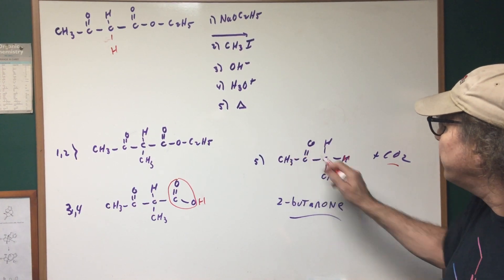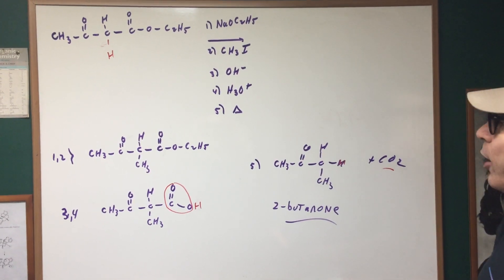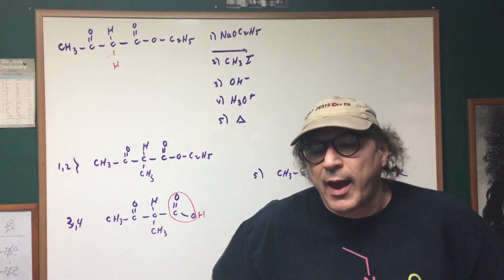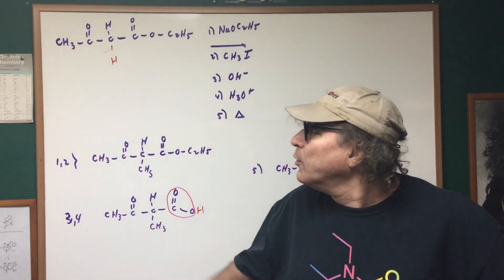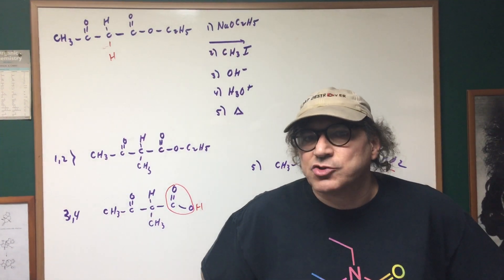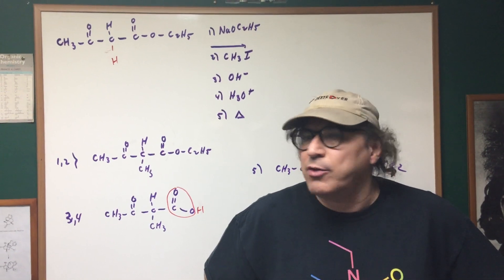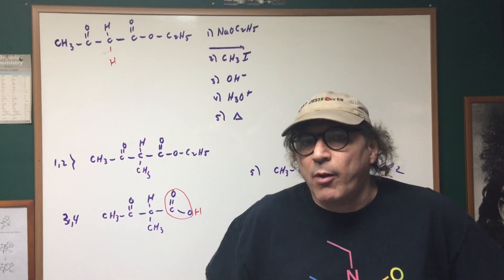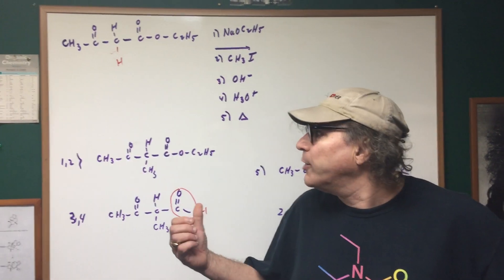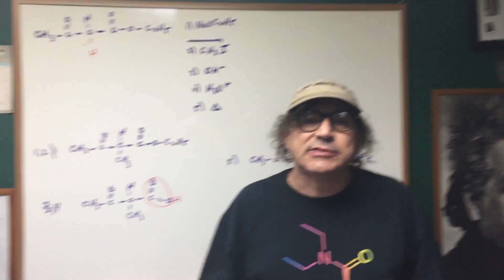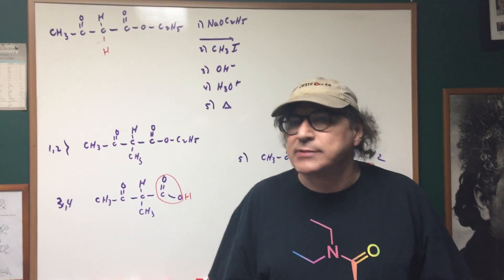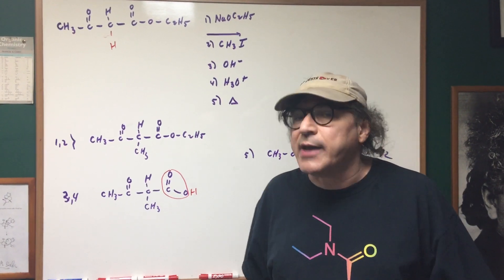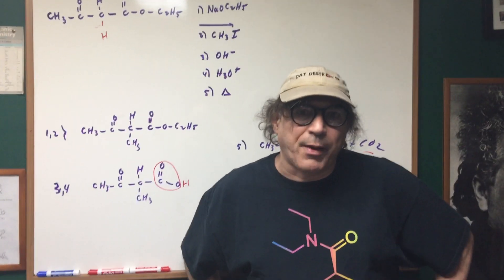And as you guys can see, you get 2-butanone. This is a sure-bet type of reaction for the DAT. We got one just like this in the DAT Destroyer, make sure you know it and you may thank me someday. All right, I hope this clears up how to deal with beta keto acids and reactions such as the malonic ester synthesis or the acetoacetic ester synthesis dealing with these acids. All right, good day to you, bye bye.